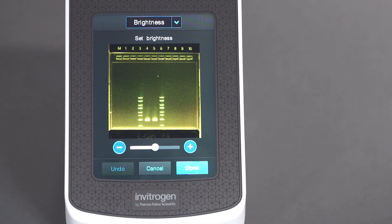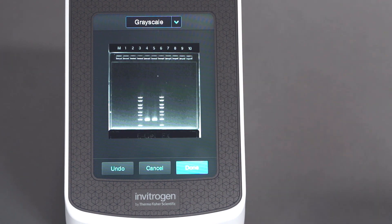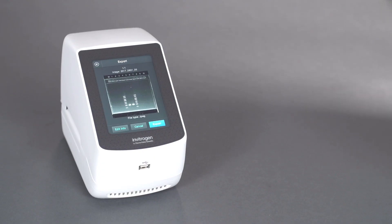To perform additional editing, select Edit and choose from several image adjustment options. When finished, select Done.